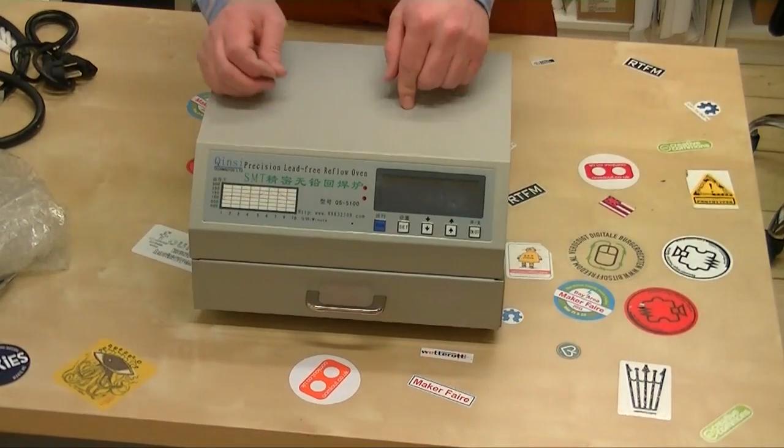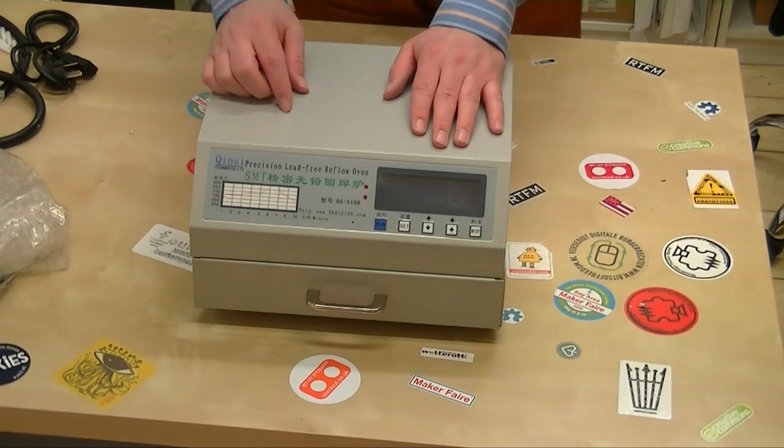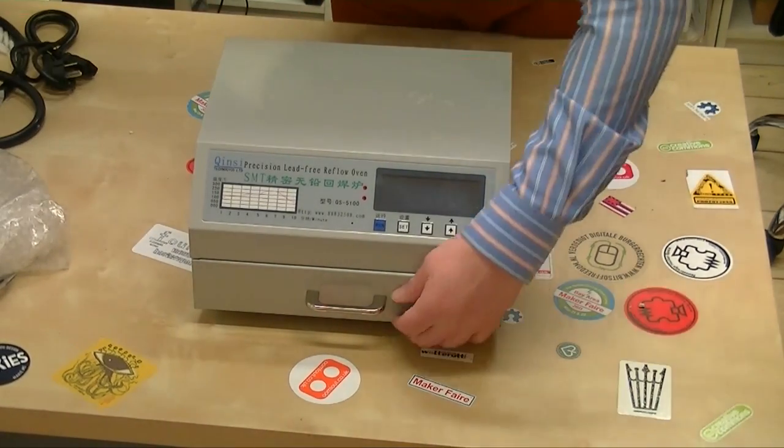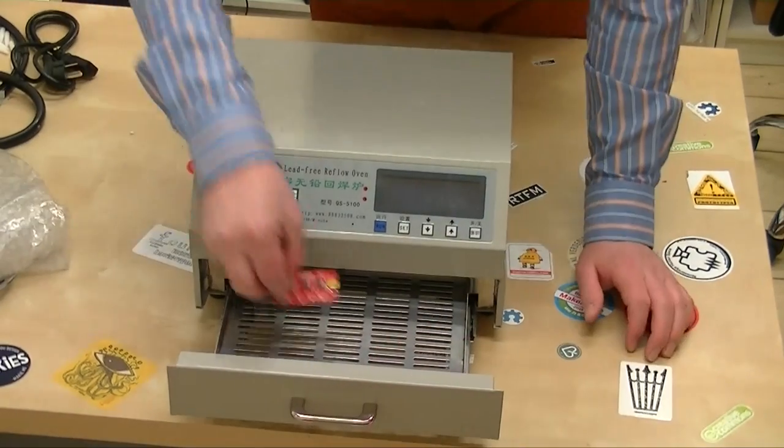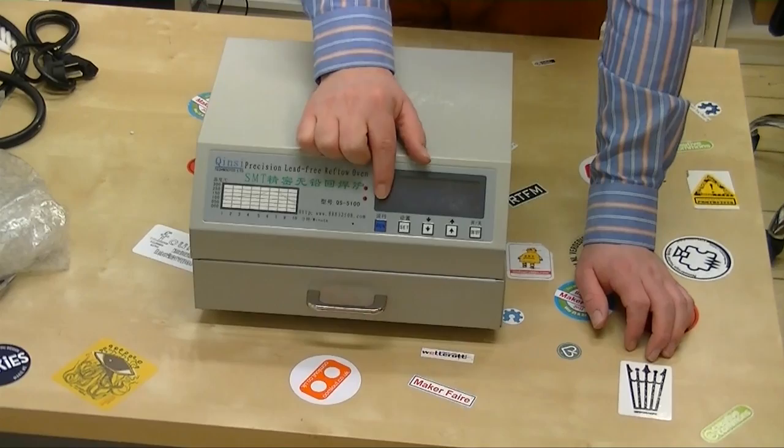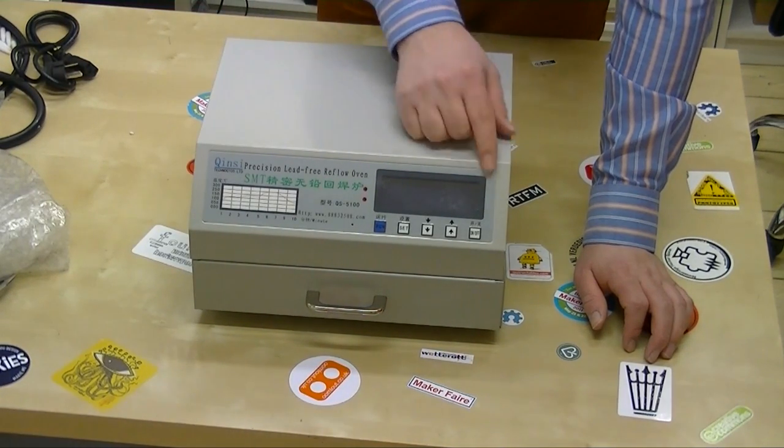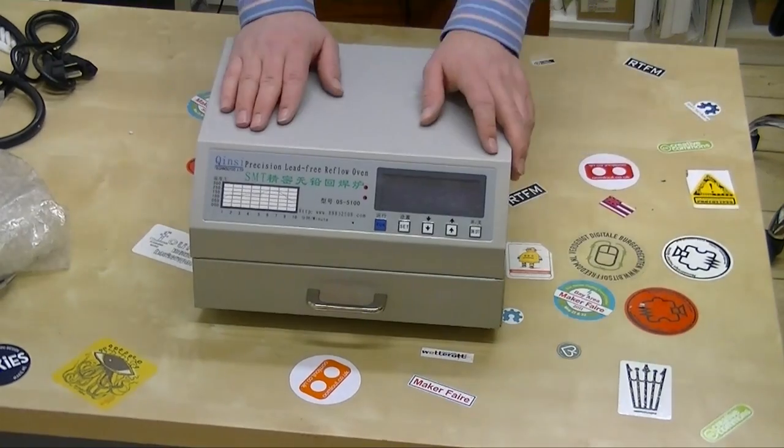Okay so this is the reflow oven. What you do is spread solder paste on a board and then place some parts on it. And you pull out the drawer, stick it in there and close it up. And it runs a preset heating pattern that heats up the board, reflows the solder and then cools it down again. This is a very small one.